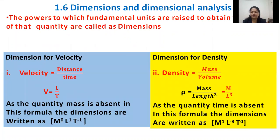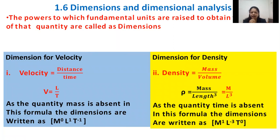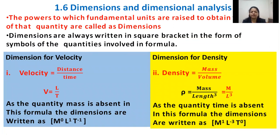The dimension of a physical quantity is nothing but the powers to which the fundamental units are raised to obtain that physical quantity. How much the power is raised to that unit is known as the dimensions. It can be expressed in a square box. The dimensions of length are noted as capital L, the dimensions of mass are noted as M, and the dimensions of time are noted as T.